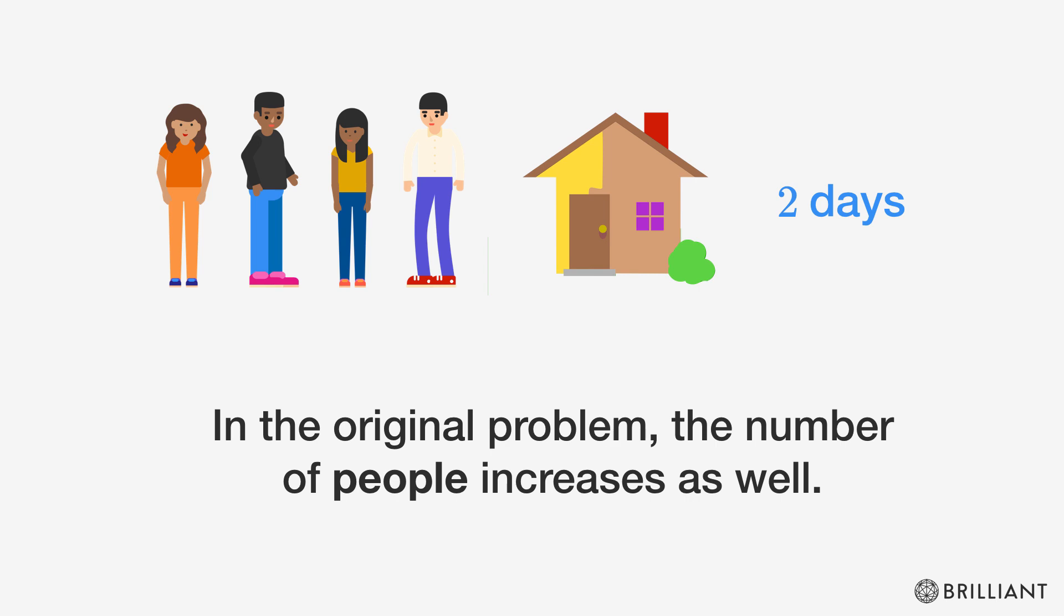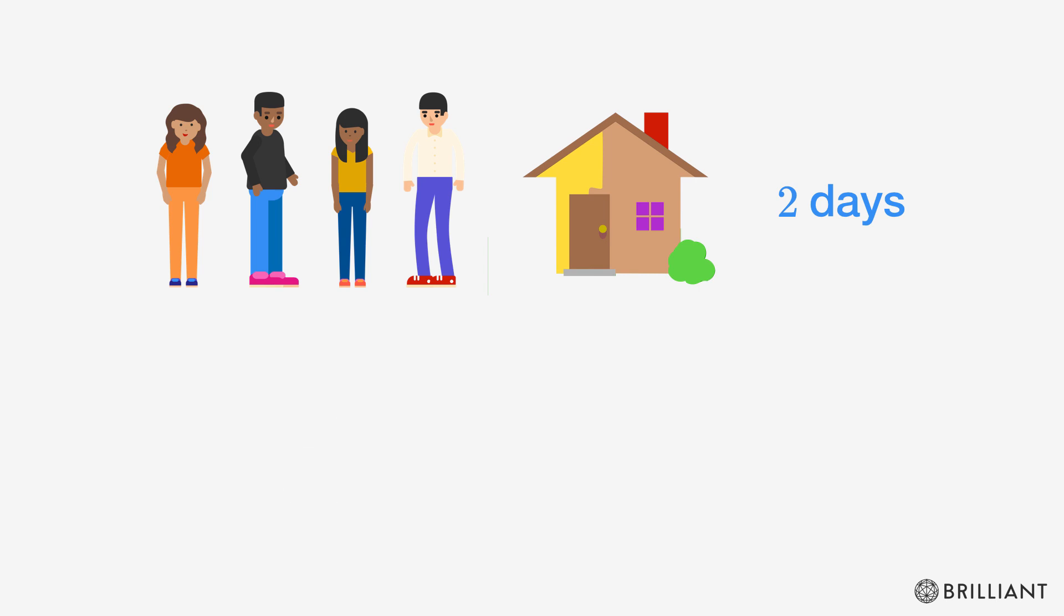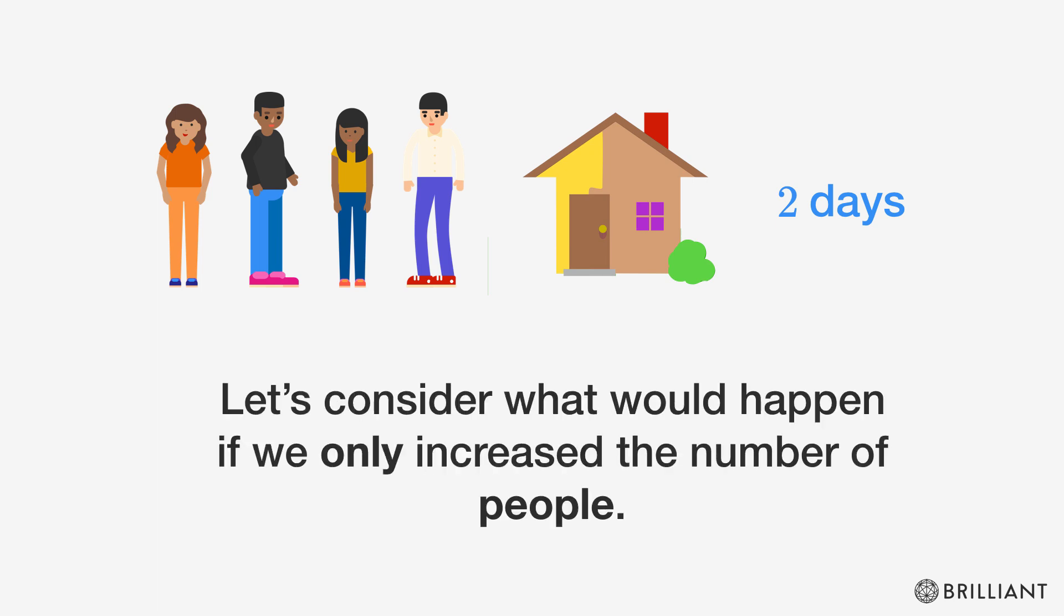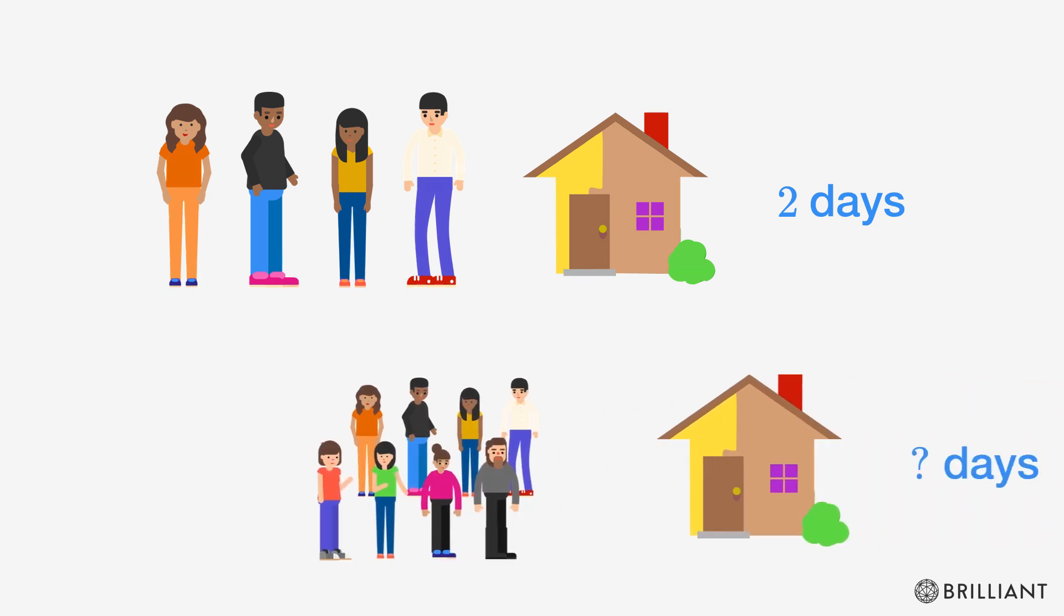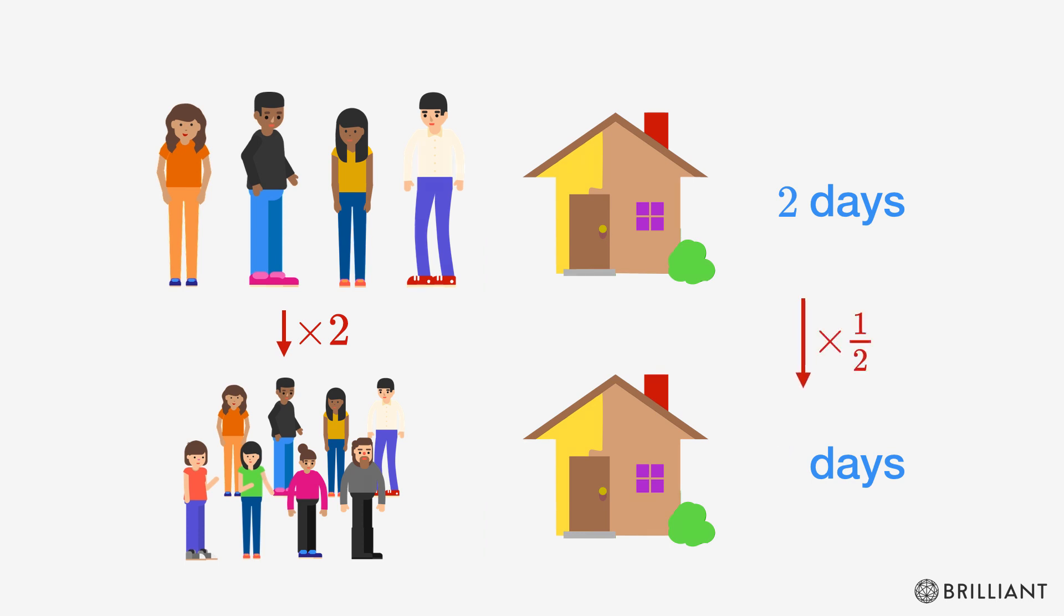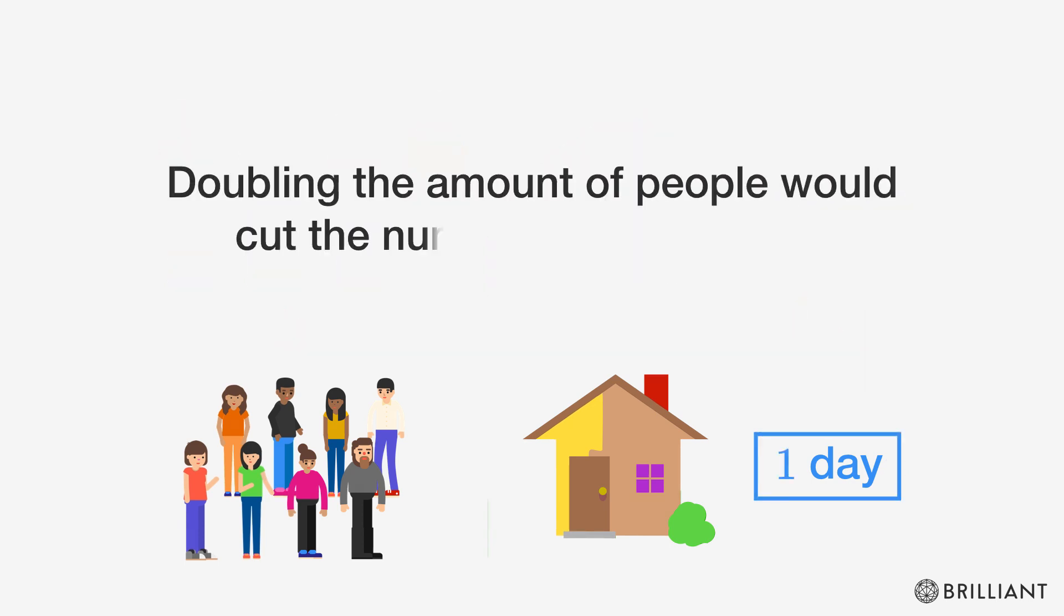In the original problem, the number of people increases as well. Let's consider what would happen if we only increased the number of people. Since they can do twice as much work in the same amount of time, doubling the amount of people would cut the number of days in half.